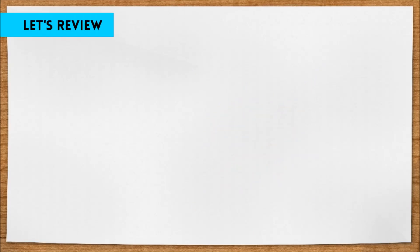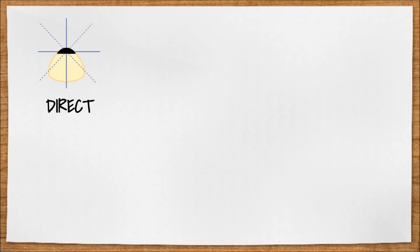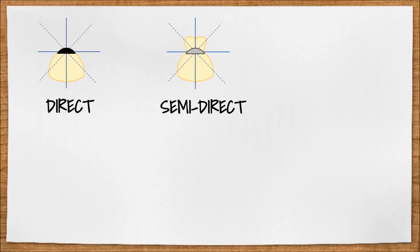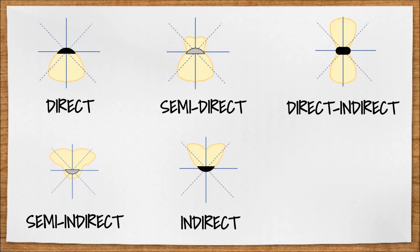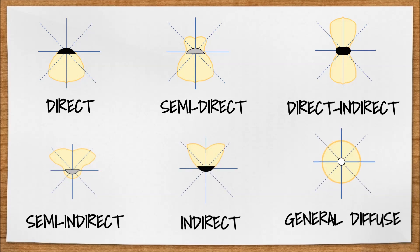So let's run through them again. We have direct, semi-direct, direct-indirect, semi-indirect, indirect, and general diffuse.